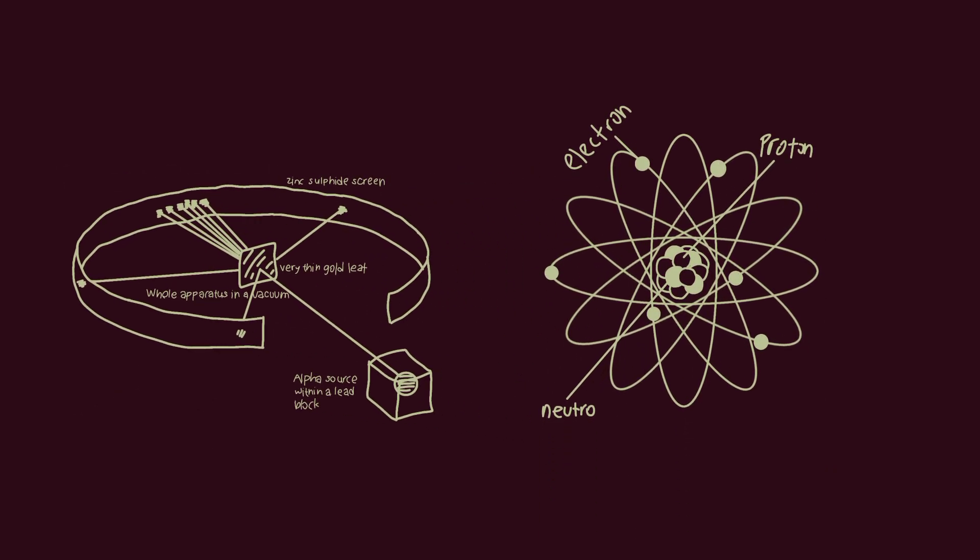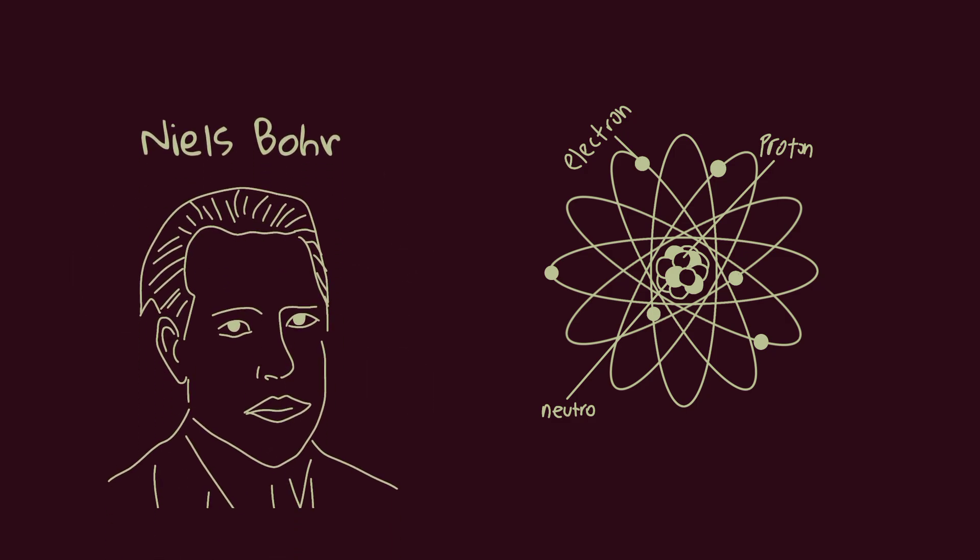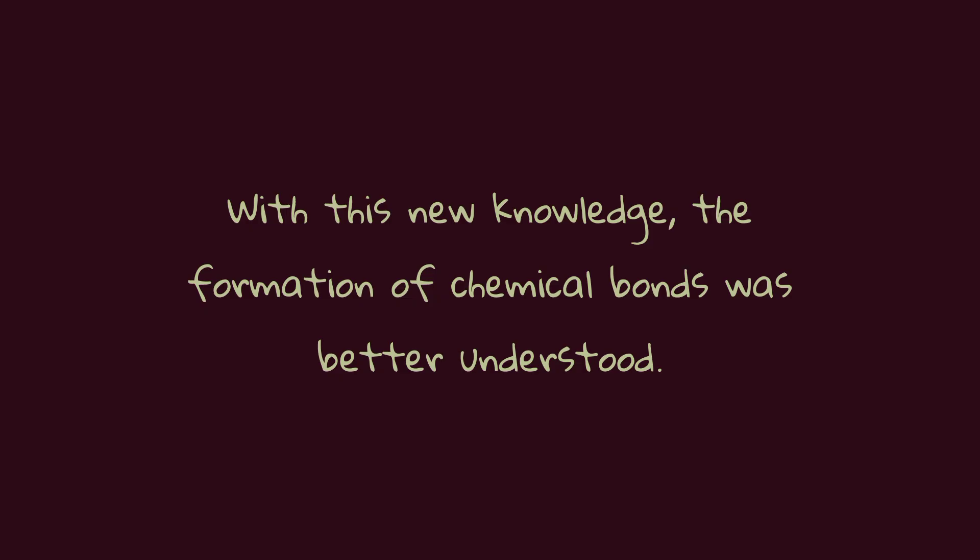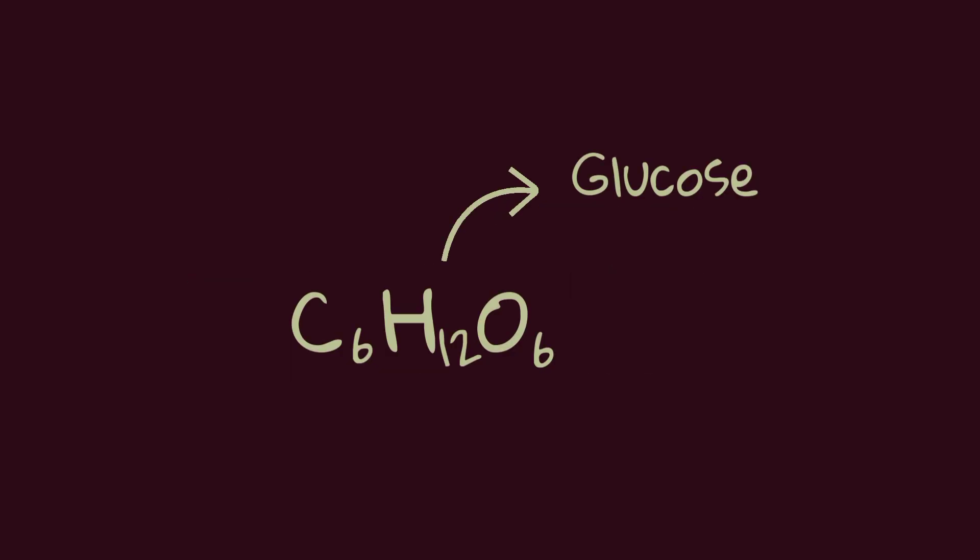This discovery disproved the plum pudding model and revealed that the atom was mostly empty space. Niels Bohr later developed a model showing that electrons exist in specific energy levels, or orbits, around the nucleus. With this new knowledge, the formation of chemical bonds was better understood. Chemical formulas now showed not only the number of atoms, but also how they were connected to each other.